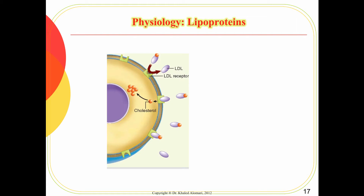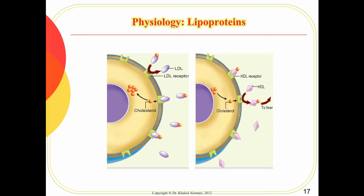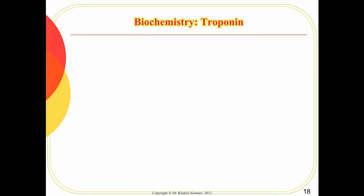Another very important topic is lipoproteins. LDL is the bad cholesterol; in high concentrations it can lead to atherosclerosis. HDL is the healthy cholesterol because it takes cholesterol to the liver, while LDL brings it to the blood vessels. Accumulation of cholesterol in the blood vessels leads to atherosclerosis, which affects the diameter of the vessels and therefore blood circulation.